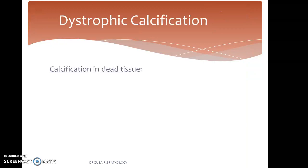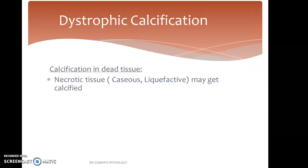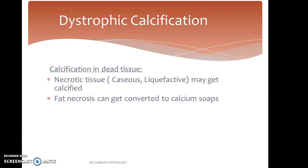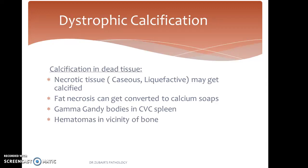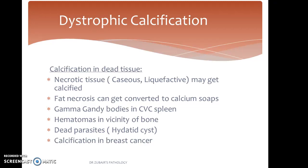Dystrophic calcification occurs in dead tissue such as necrotic tissue. Caseous necrosis of TB and liquefactive necrosis may get calcified. Fat necrosis can get converted to calcium soaps, as seen in the pancreas. Gamma-Gandy bodies occur in chronic venous congestion of the spleen. Hematomas in the vicinity of bone and dead parasites such as hydatid cysts can also get calcified.